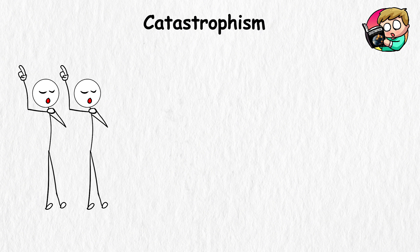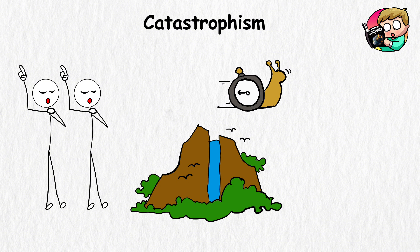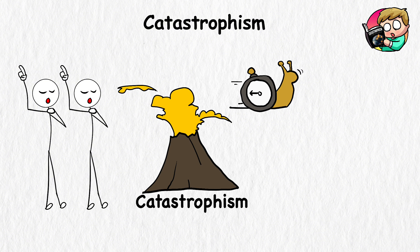This theory revolutionized how science looks at the evolution of life on the planet. Before, the popular belief was that Earth's features were shaped slowly and steadily. But instead of slow and steady, catastrophism is more like the fast and the furious, wherein the planet has its fair share of both action scenes.